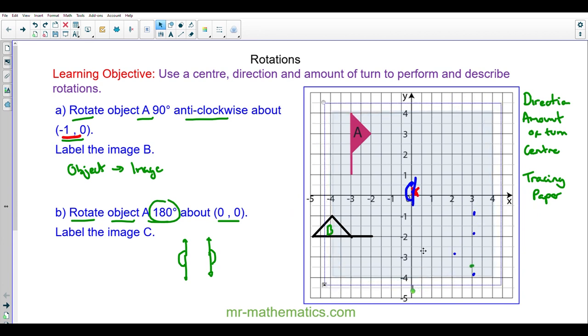I'm just going to tighten it up a little bit. And you can see, I can just recreate the object to form the image, which I'm going to label C. Okay, let's try the next question.